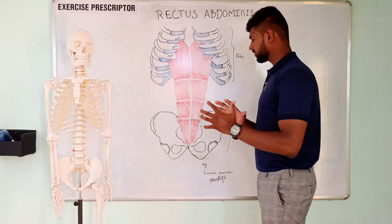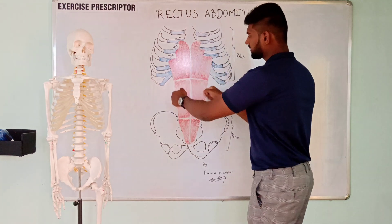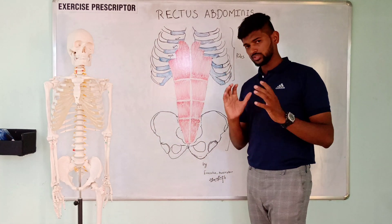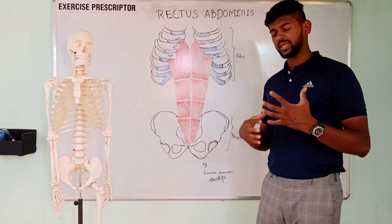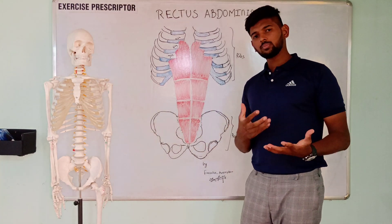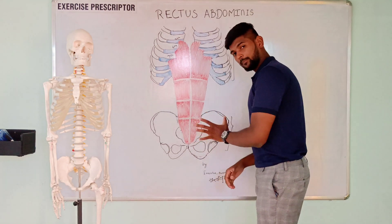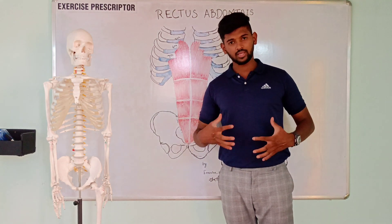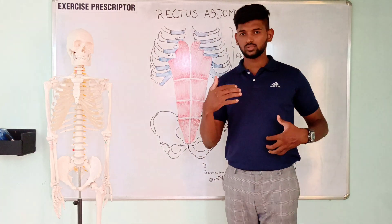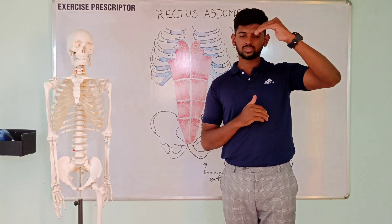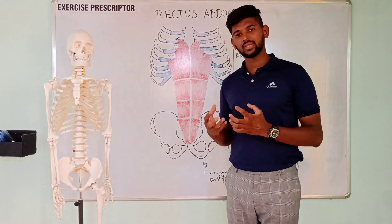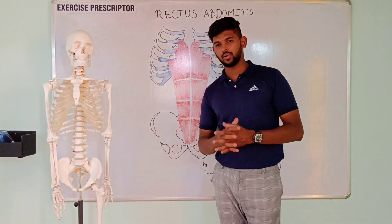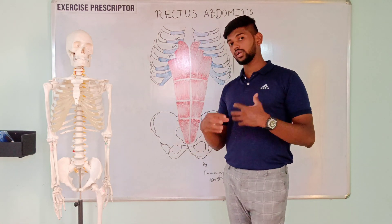Rectus abdominis can also create compression of the abdominal pelvic cavity and depress the ribs, though these actions are not majorly contributed by the rectus abdominis. Compression of the abdominal pelvic cavity is primarily created by the transverse abdominis. During compression, it reduces the volume of the cavity to increase intra-abdominal pressure, causing the diaphragm to return to its dome shape. This happens during breathing out, coughing, sneezing, vomiting, and urination.